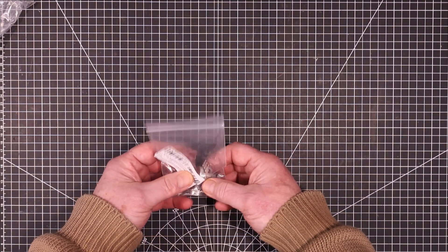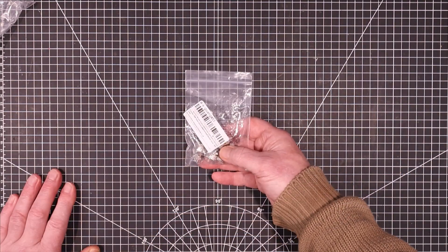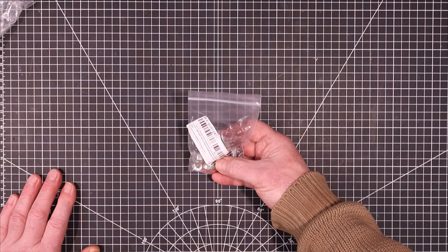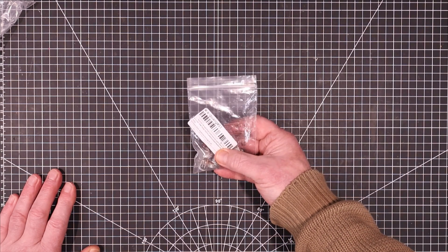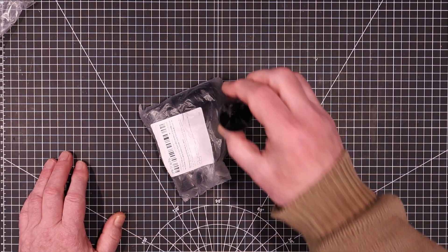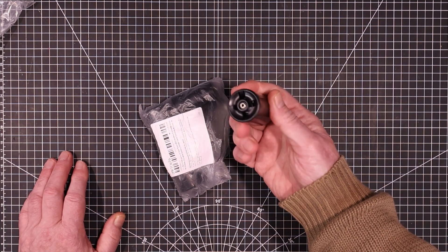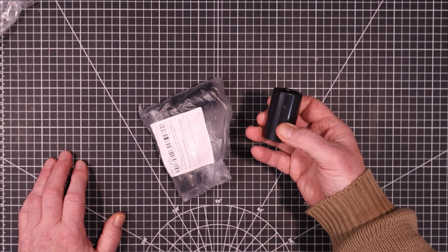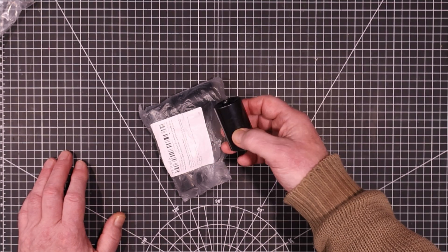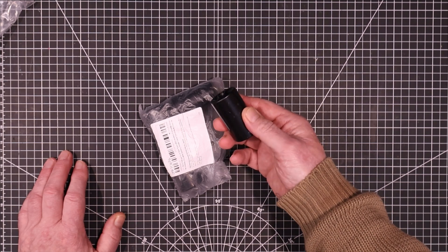100,000 ohm audio taper potentiometers. I'm very low on audio taper potentiometers. I should get some other values as well just so I can have them around. These are just little converters. Take an AA cell and turn it into a D cell. And I've kind of gone away from any other kind of cell other than small primary lithium cells for these kinds of purposes.